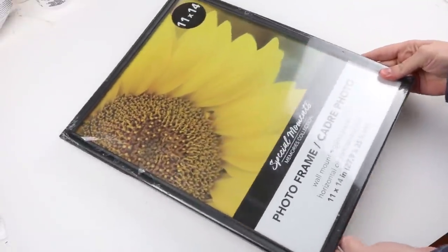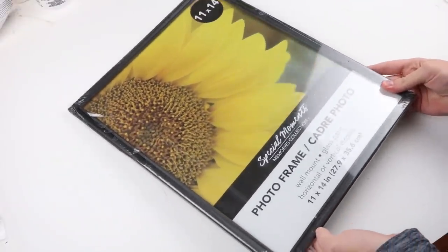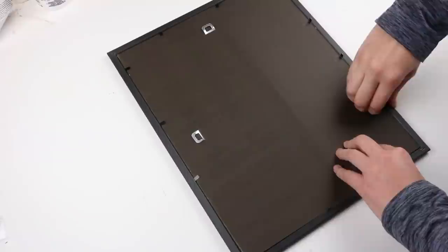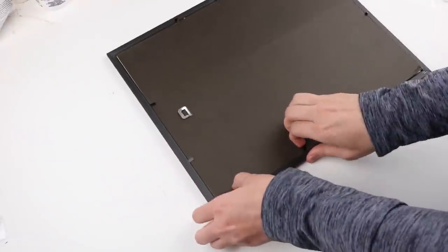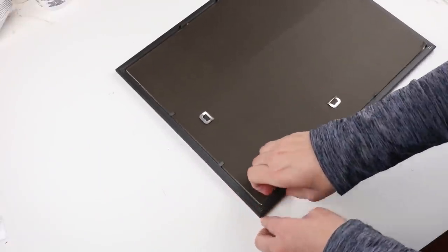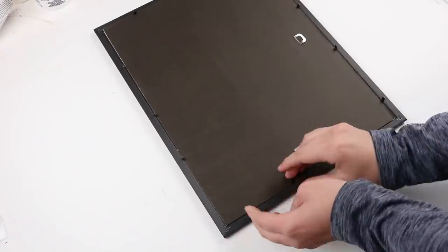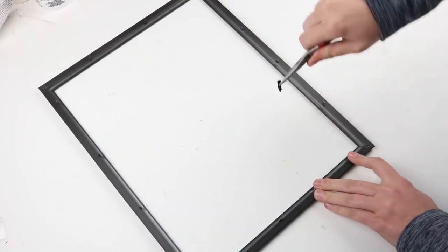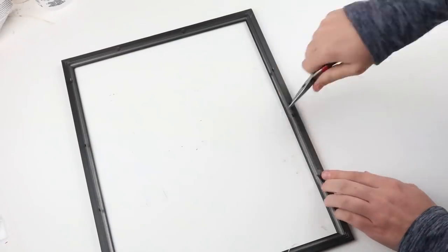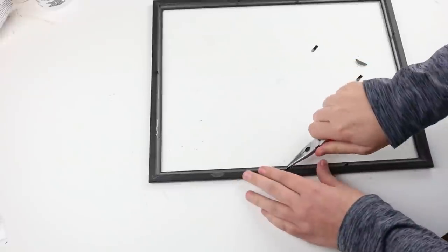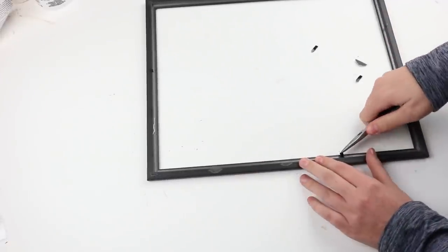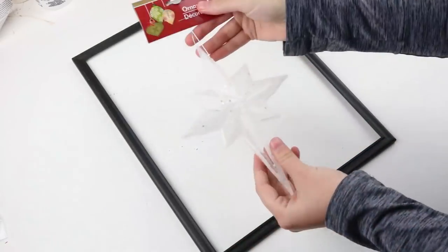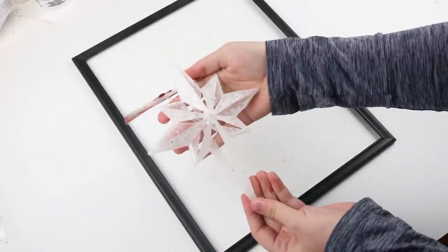For this project you will need two 11 by 14 frames from Dollar Tree. All that you need is the actual frame so just take everything out. I would keep the glass for any other future projects. Just pull these out, they hold the glass and backing in.